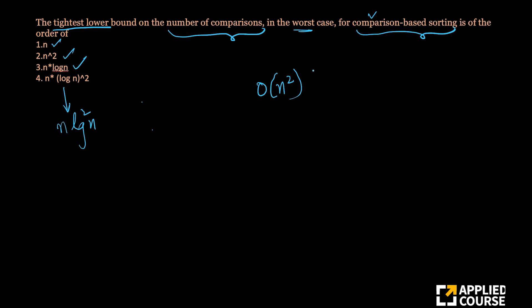We have spent considerable amount of time to justify why it is order of n square and why any comparison-based algorithm, whatever you do, in the worst case it will continue to have order of n square complexity.